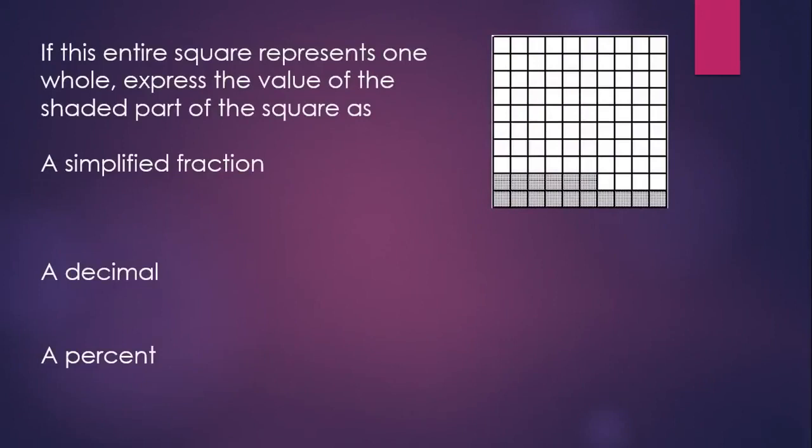If this entire square represents one whole, express the value of the shaded part of the square as a simplified fraction, as a decimal, and as a percent. The entire square is divided into 100 equal pieces, and there are 16 of them shaded. So as a simplified fraction, we can call this 16 hundredths, which simplifies to 4 25ths. As a decimal, if we say 16 hundredths and write 16 hundredths, we have our decimal number written. And since percent means out of 100, 16 hundredths would be the same thing as 16 percent.